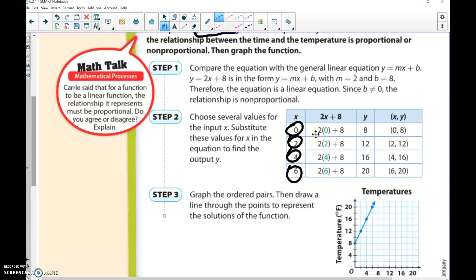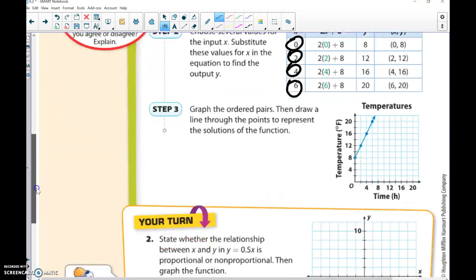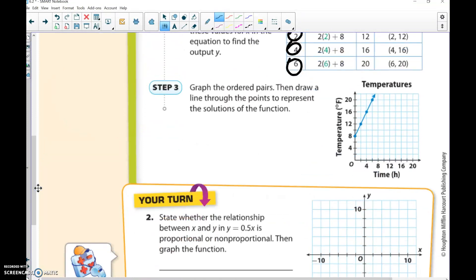We did some math to figure out: 2 times 0 plus 8 is 8, 2 times 2 plus 8 is 12, 2 times 4 plus 8 is 16, and 2 times 6 plus 8 is 20. Once we plot all those points, we get something that looks like that, which would be a linear function. If we have a graph, we're looking for a straight line. If we have an equation, we're looking for something that doesn't have that x squared.